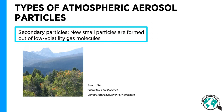Secondary aerosol is vapors that condense on existing particles and new particles that form from the vapors. The origin can be either anthropogenic, by different types of fossil fuel burning, or natural, for example, via emissions of organic vapors from trees. Blue haze, which is depicted here, is a bluish appearance similar to smog caused by newly formed particles from tree emissions. The size of the particles is fine.